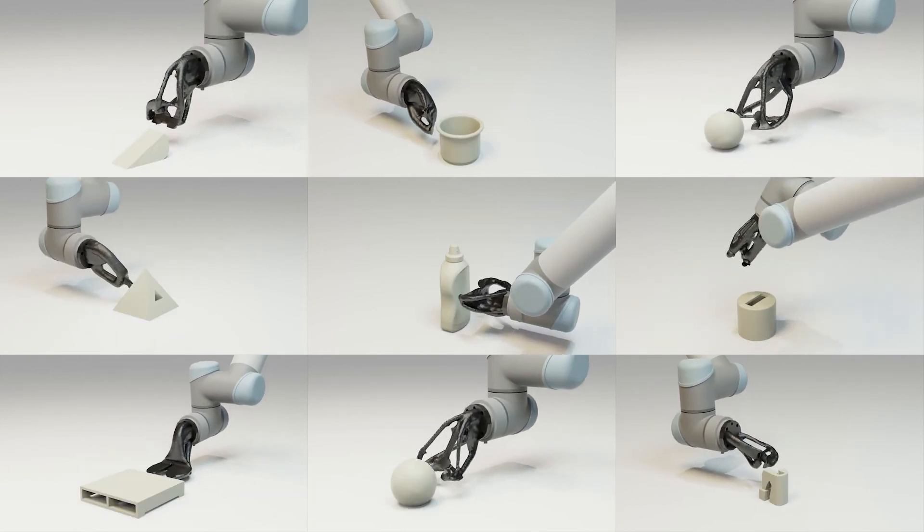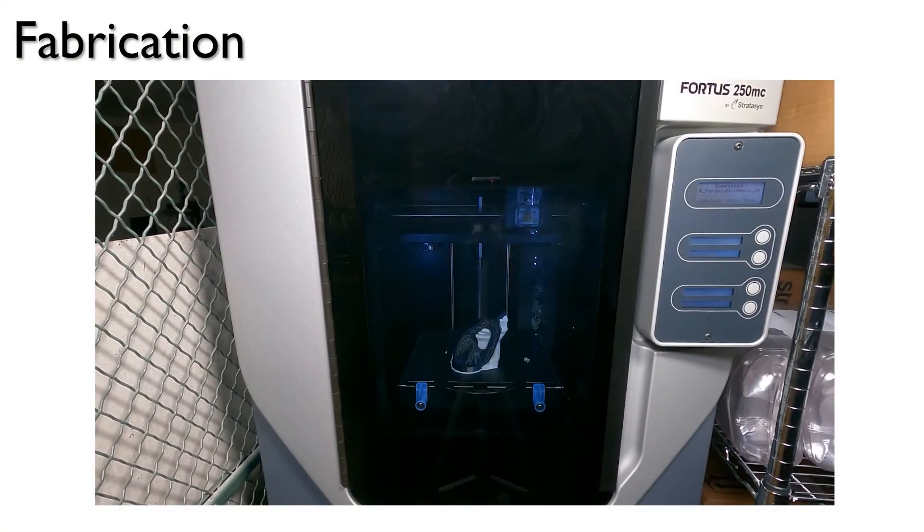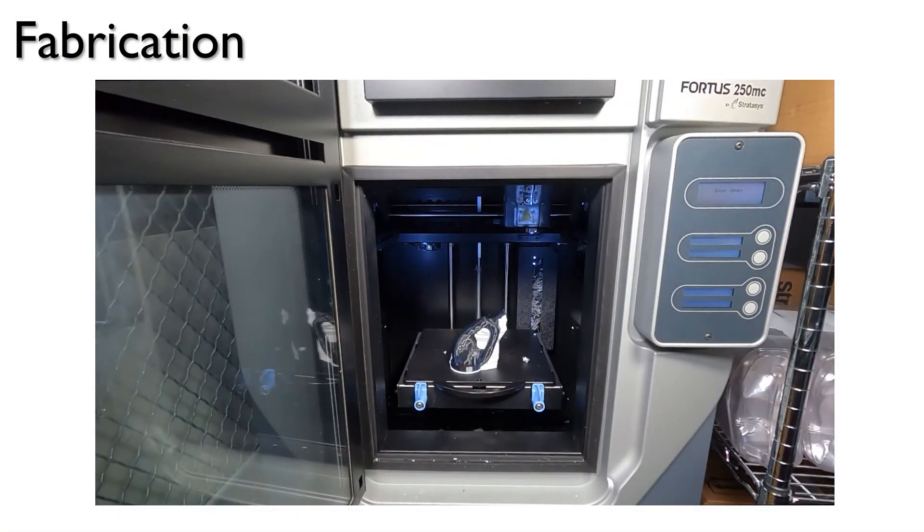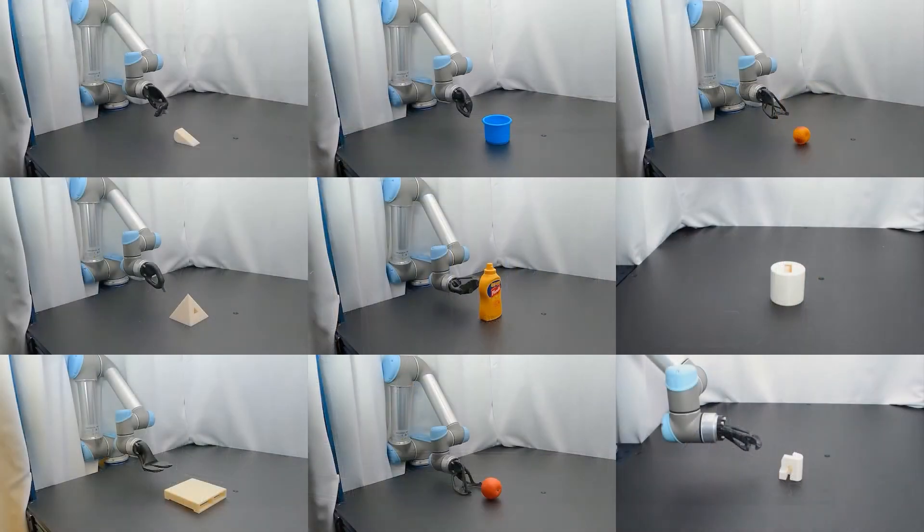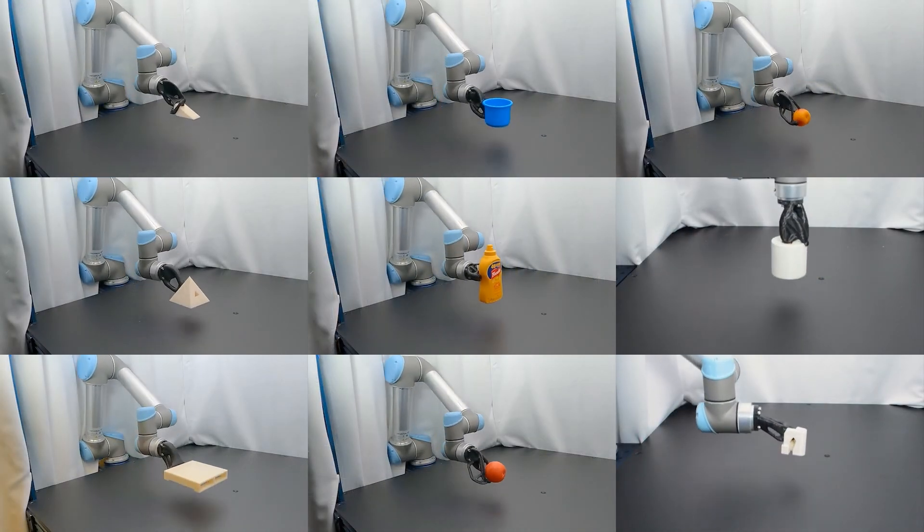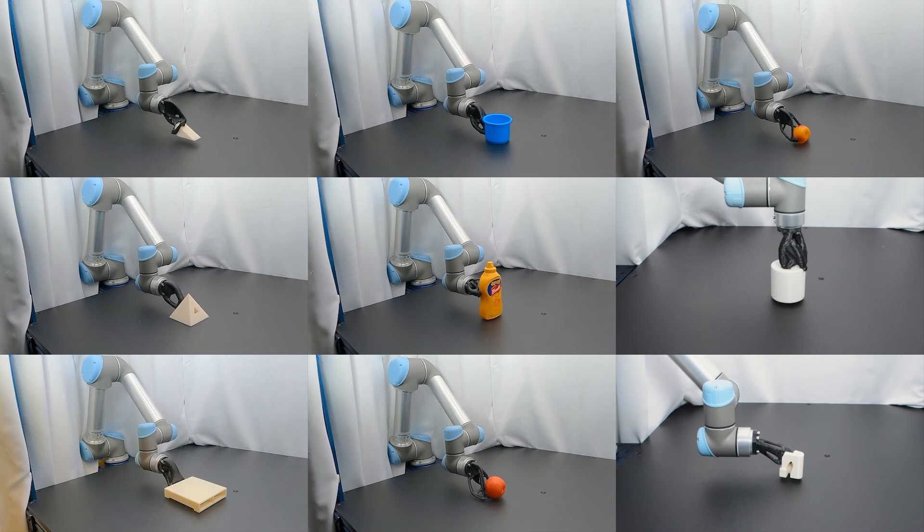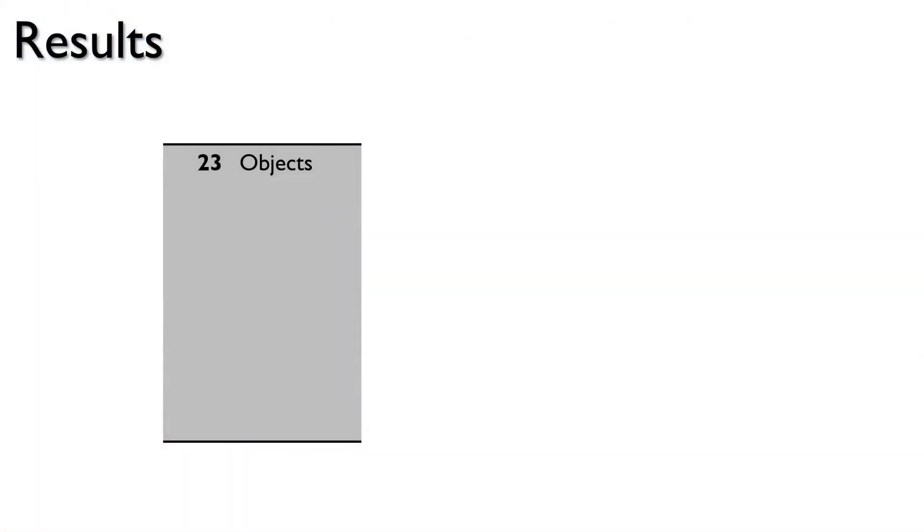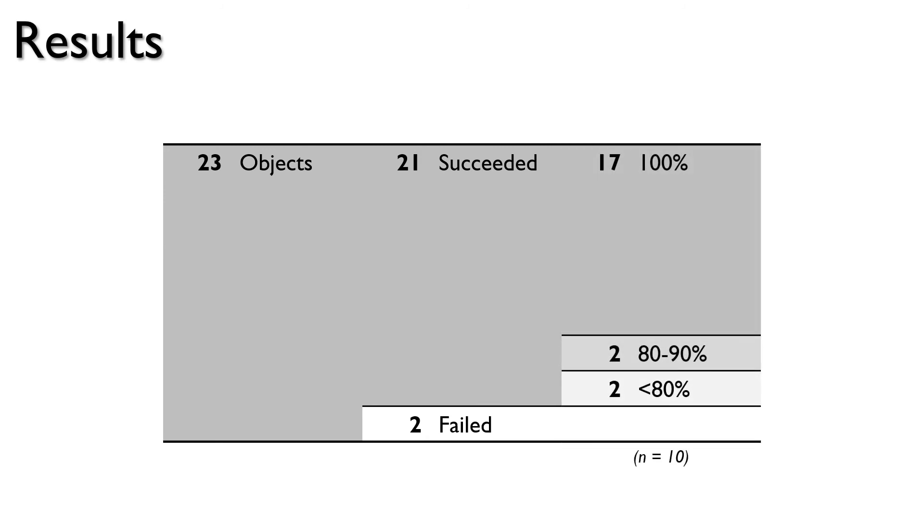To bridge the virtual to reality gap, we 3D printed all the grippers and tested them on a UR5 robot. We tested picking up each object 10 times, and the results were promising. Of the 23 experiments, 21 led to successful pickups. 17 of these experiments had a 100% success rate, and only 2 had success rates below 80%.